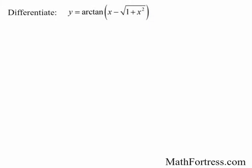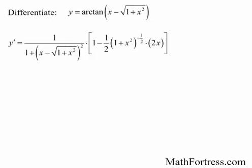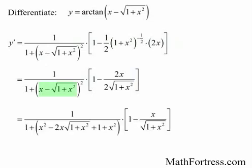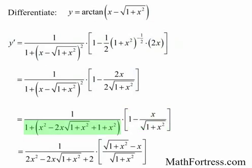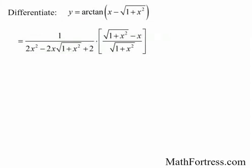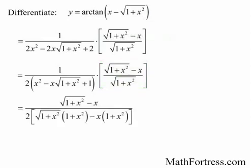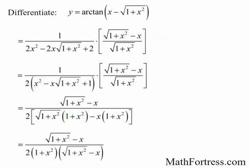Differentiate the expression arctangent of the quantity x minus the square root of 1 plus x squared. We're going to use the chain rule here. Applying the chain rule, we expand the binomial, combine terms to get a common fraction, simplify and add like terms. We then factor out a 2 from the expression, multiply numerator and denominator, and group the term 1 plus x squared so that we can factor it out. Factoring out 1 plus x squared from the denominator, we arrive at the following expression.